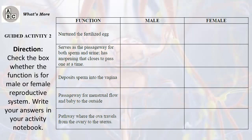Guided Activity 2 — Direction: Check the box whether the function is for the male or female reproductive system. Write your answers in your activity notebook. Functions listed: nurture the fertilized egg; serves as passageway for both sperm and urine; has an opening that closes to pass one at a time; deposit sperm into the vagina; passageway for menstrual flow and baby to the outside; pathway where the ova travels from the ovary to the uterus.